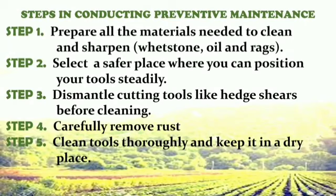Steps in Conducting Preventive Maintenance. Step 1: Prepare all the materials needed to clean and sharpen. Step 2: Select a safer place where you can position your tools steadily. Step 3: Dismantle cutting tools like hedge shears before cleaning. Step 4: Carefully remove rust. Step 5: Clean tools thoroughly and keep them in a dry place.